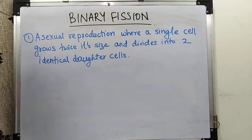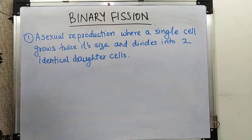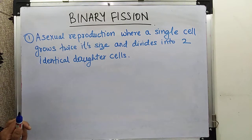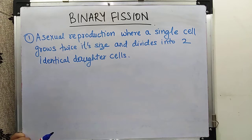Hi, I hope you went through the last video and understood what is reproduction and what is sexual and asexual reproduction — the difference between them. The main differences are: one requires two parents, the other requires only one parent. Sexual reproduction involves gametes; asexual reproduction doesn't, which is why sexual reproduction has genetic variance while asexual reproduction doesn't. Sexual reproduction takes place by meiosis; asexual reproduction takes place by mitosis. Sexual reproduction is a slow process; asexual reproduction is a quick process.